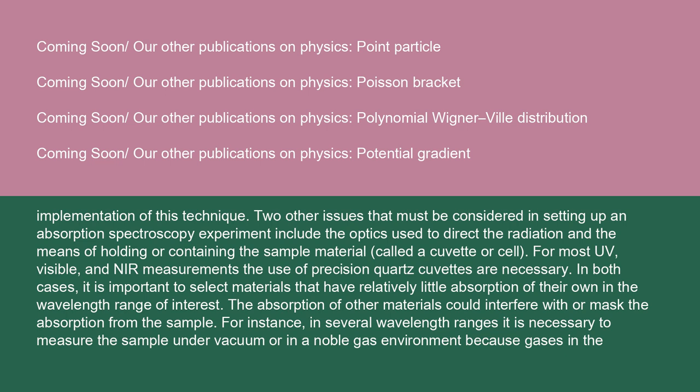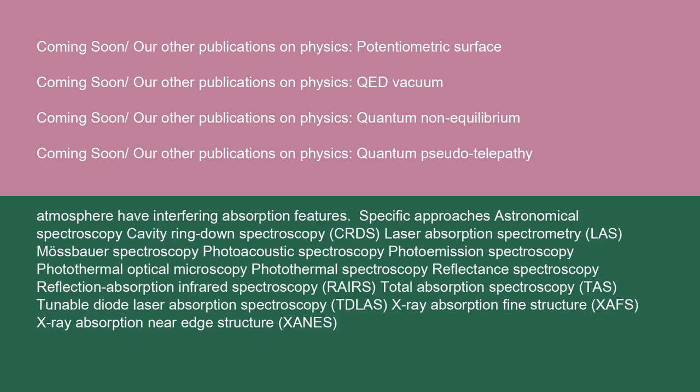Two other issues that must be considered in setting up an absorption spectroscopy experiment include the optics used to direct the radiation and the means of holding or containing the sample material, called a cuvette or cell. For most UV, visible, and NIR measurements, the use of precision quartz cuvettes is necessary. In both cases, it is important to select materials that have relatively little absorption of their own in the wavelength range of interest, as the absorption of other materials could interfere with or mask the absorption from the sample. For instance, in several wavelength ranges it is necessary to measure the sample under vacuum or in a noble gas environment because gases in the atmosphere have interfering absorption features.